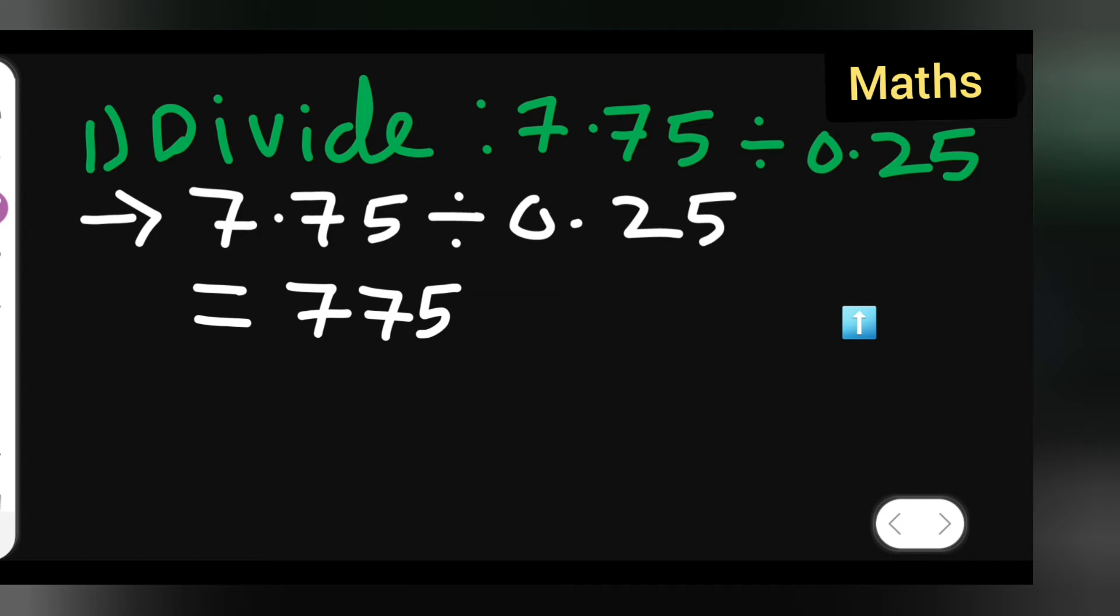Now the decimal point is 100. Can you see this? One, two, so there will be two zeros coming here. Put this zero properly.